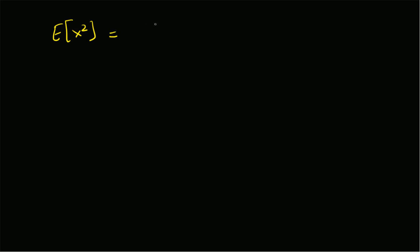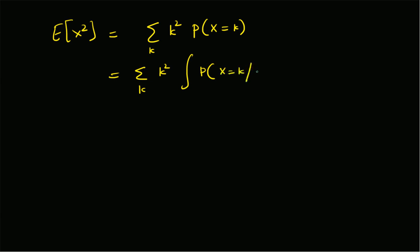The second moment E[X²] for the beta binomial random variable is defined as the summation over k of k² times P(X=k). This marginal probability can be rewritten as an integral of P(X=k | p, n) multiplied by the density function of p given n, α, and β, integrated over p — that is marginalization over the product of the conditional PMF and the beta density.